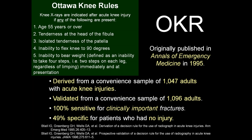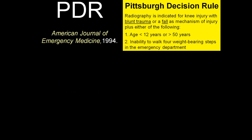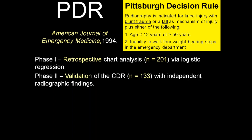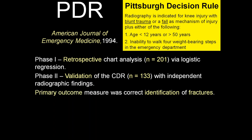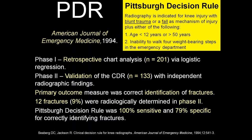Here's one you may not know: the Pittsburgh Decision Rule. Radiography is indicated for knee injury with blunt trauma or fall as a mechanism with either of two criteria: is the patient less than 12 or older than 50? If so, they need x-rays. The second criterion — common to both rules — is inability to walk four weight-bearing steps in the emergency department. Published in American Journal of Emergency Medicine 1994, Phase 1 was a retrospective chart analysis of 200 patients; Phase 2 was validation on 133 patients with independent radiographic findings. Roughly 10% had fractures. The Pittsburgh Decision Rule was 100% sensitive and almost 80% specific.